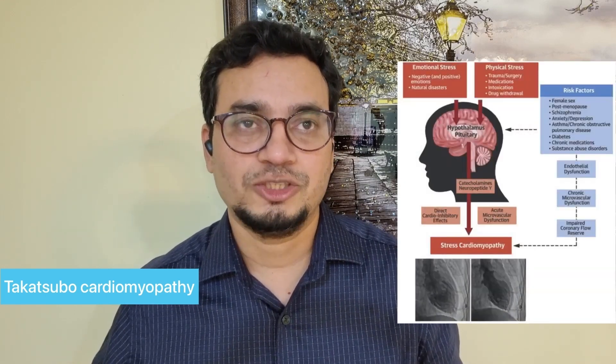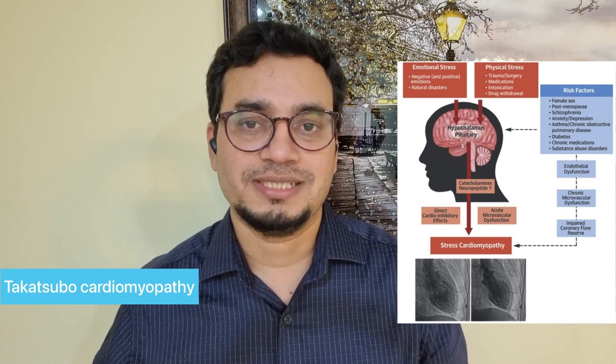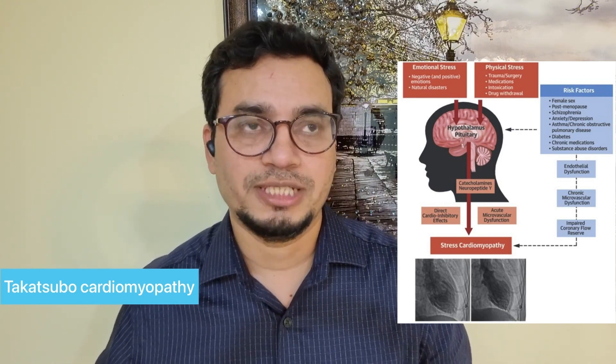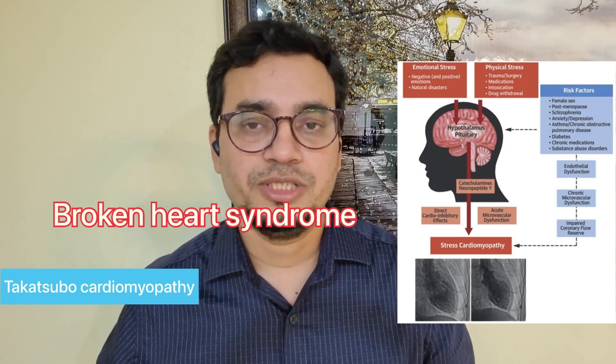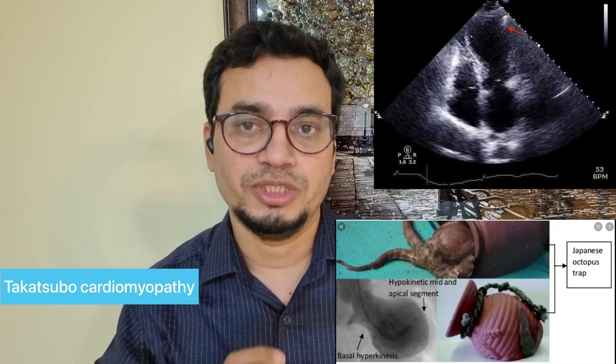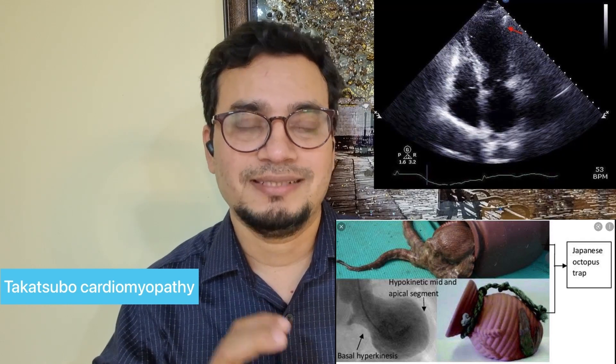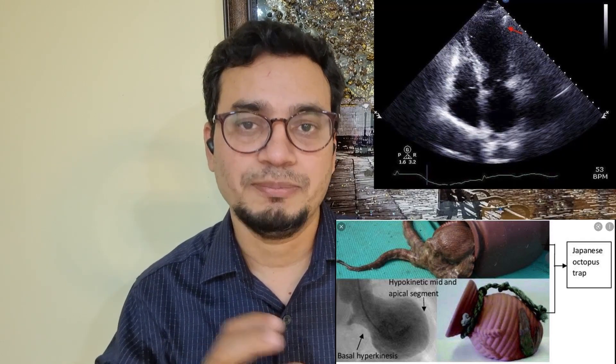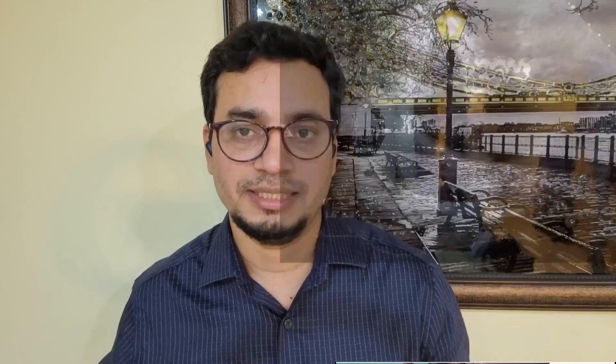Takotsubo cardiomyopathy is a temporary heart condition that develops in response to intense emotional or physical experience or stress — known as stress cardiomyopathy or broken heart syndrome. On echocardiography, you will find apical ballooning resembling an octopus trap configuration. The apex and lateral ventricular segments are hypokinetic while the base is hyperkinetic.